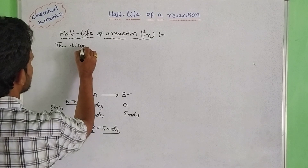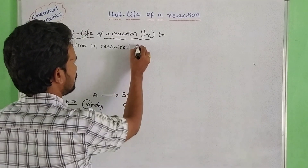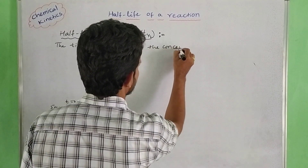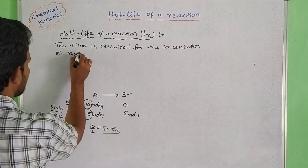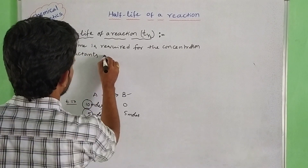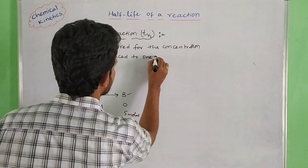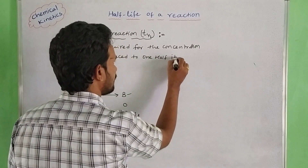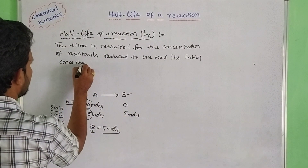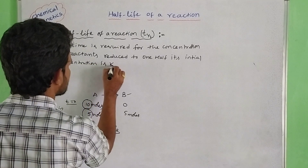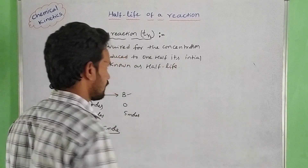So the time required for the concentration of reactants to be reduced to one-half of its initial concentration is known as the half-life of a reaction.